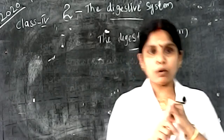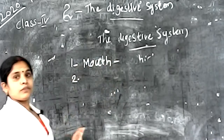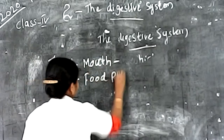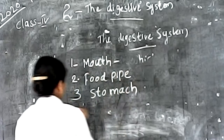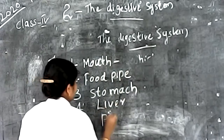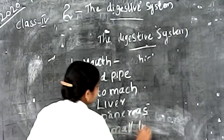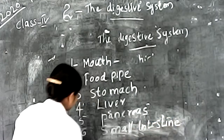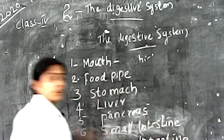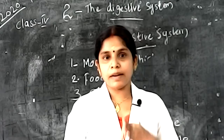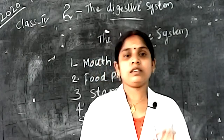First organ: mouth. Second organ: food pipe. Third organ: stomach. Fourth: liver. Fifth: pancreas. Then small intestine and large intestine. Mouth, food pipe, stomach, liver, pancreas, small intestine, large intestine — these are the organs of the digestive system.